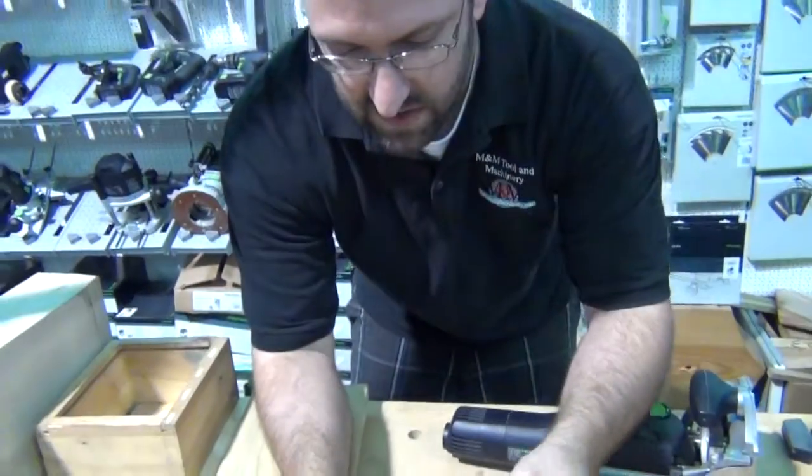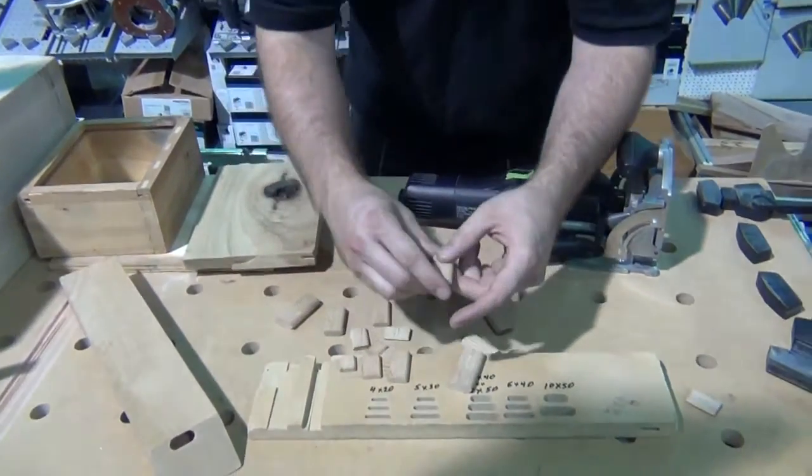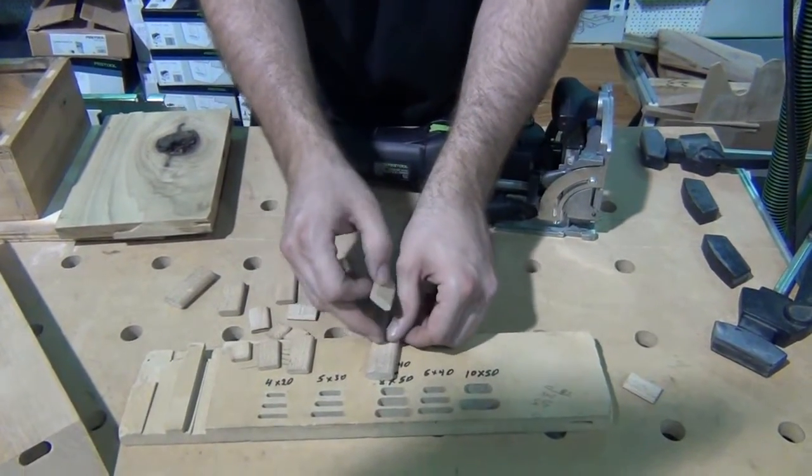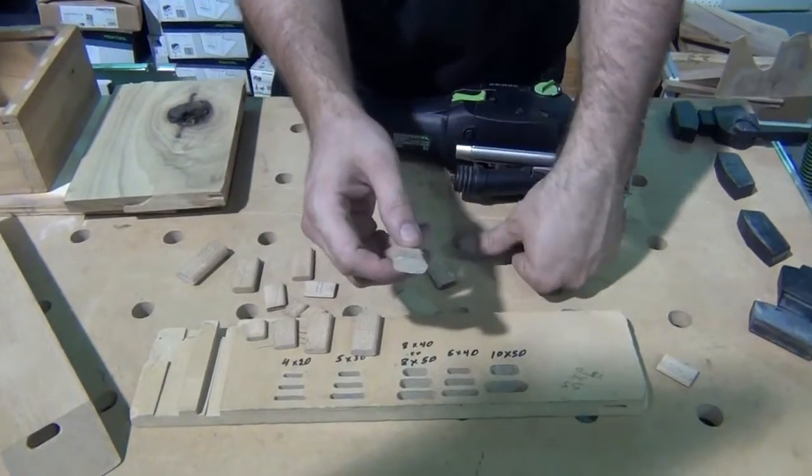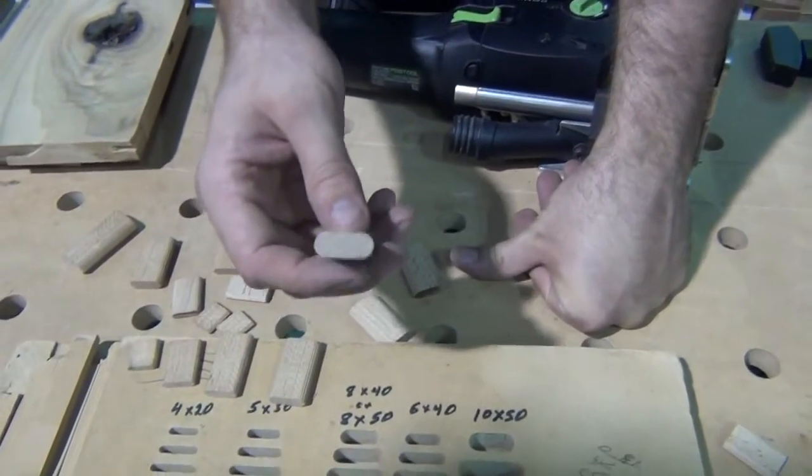So we sell a lot of these. And this is six by 40, they also make an eight by 50, meaning that the eight would be the same length as this ten is. This ten, tens are great, we don't sell all that many of the tens.